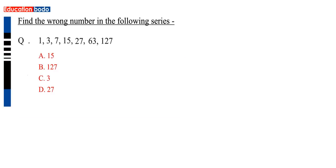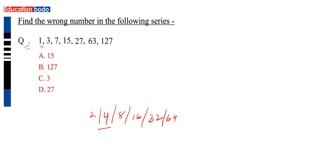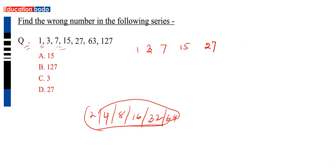If you want to take the next question: two questions will be double double. 2 equals 4, 4 equals 8, 16 equals 32 — doubling each time. The series is: 1, 3, 7, 15, 27, 63, 127.